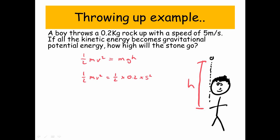So first thing, we need to work out how much energy do we have. So we're going to say a half times by 0.2, the mass, times by 5 squared. And we get 2.5 joules. So at the bottom where the guy has thrown the stone up, it had 2.5 joules of kinetic energy. That's all going to be converted into gravitational potential energy.